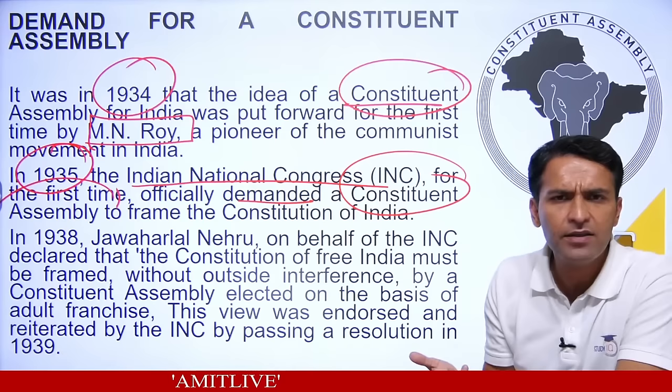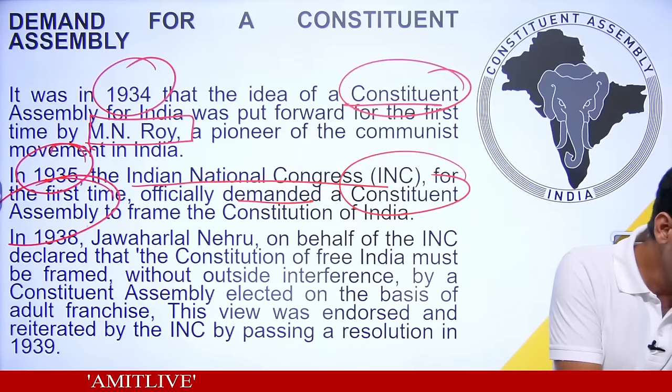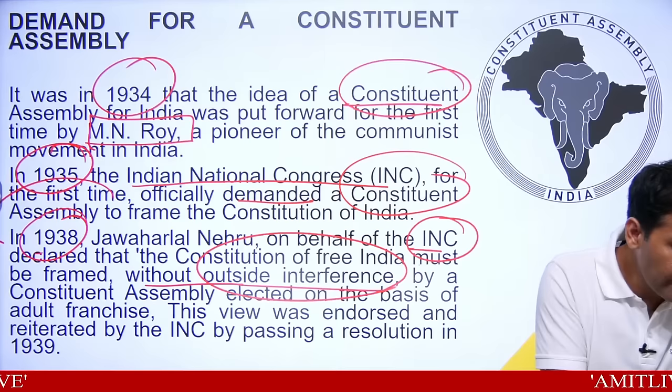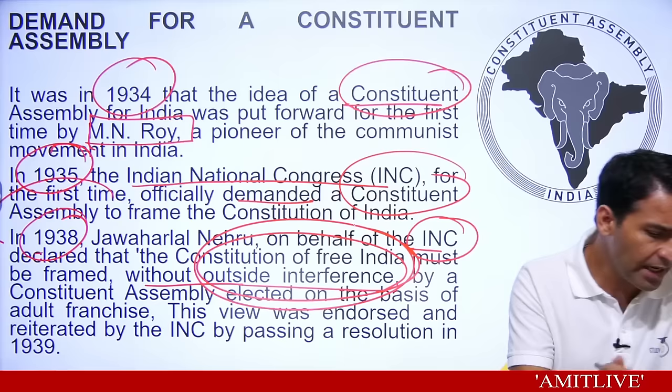In 1935, Congress officially took this stand. And in 1938, Jawaharlal Nehru on behalf of the Indian National Congress said that the constitution of India should be framed without outside interference, and the Constituent Assembly should be formed on the basis of adult franchise.